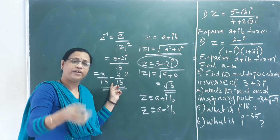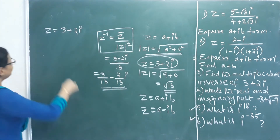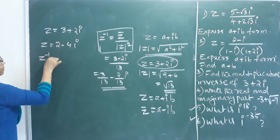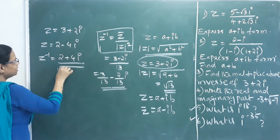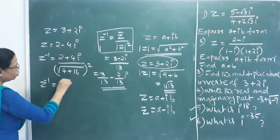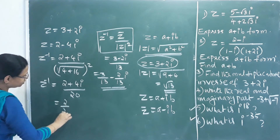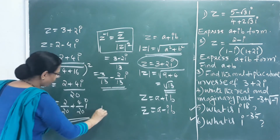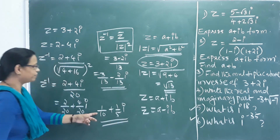To find the multiplicative inverse of 2 - 4i: the conjugate z̄ = 2 + 4i, and |z|² = 4 + 16 = 20. So z⁻¹ = (2 + 4i)/20 = 2/20 + 4/20 i = 1/10 + 1/5 i. This is the inverse of the complex number.